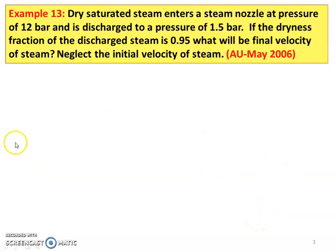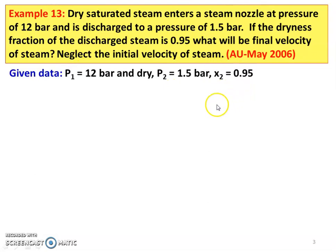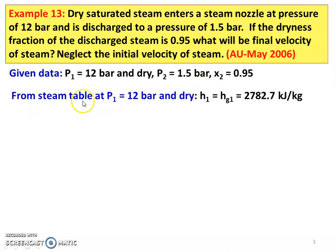The first problem in this lecture is from the May 2006 question paper. Dry saturated steam enters a steam nozzle at a pressure of 12 bar and is discharged to a pressure of 1.5 bar. If the dryness fraction of the discharged steam is 0.95, what will be the final velocity of the steam? Neglect the initial velocity. We are given P1 equals 12 bar with dry saturated steam. From the steam table at 12 bar dry saturated condition, H1 equals H_G1 which is 2782.7 kilojoules per kilogram.